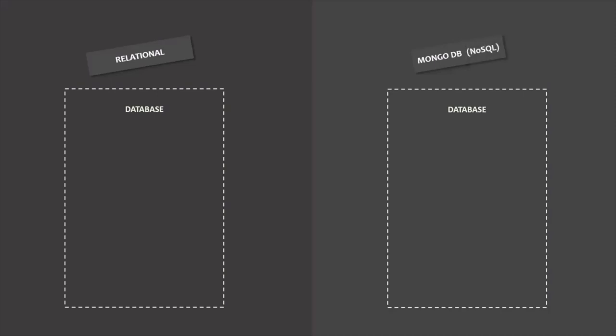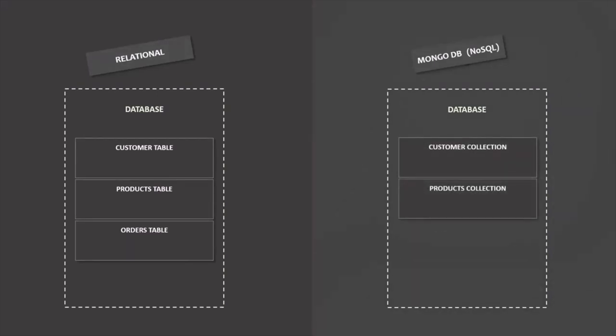In a NoSQL database solution, we don't store data in tabular format. In a relational database, a database contains tables like a customer table, product table, orders table, etc. But a database in MongoDB contains collections — we do not have tables in MongoDB. If you are coming from a relational database background, you can think of a collection as a table of data.